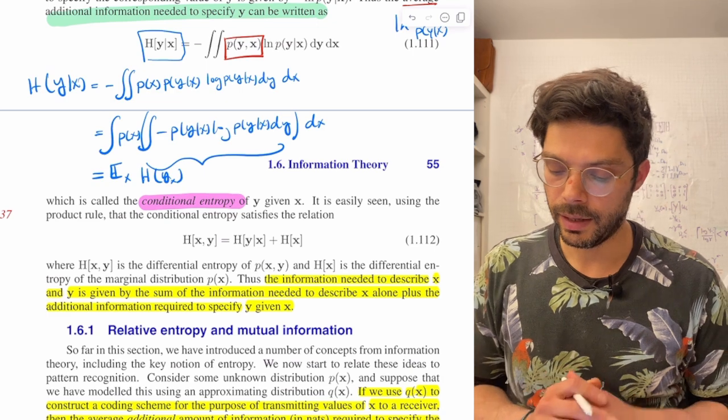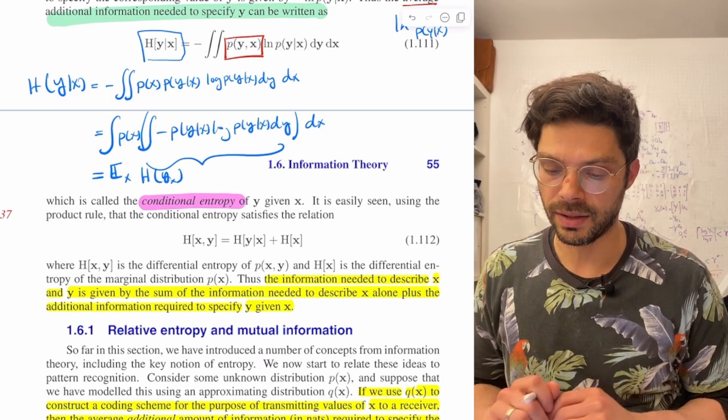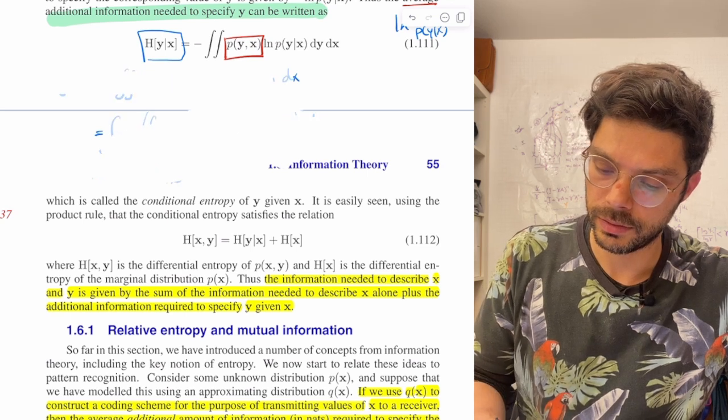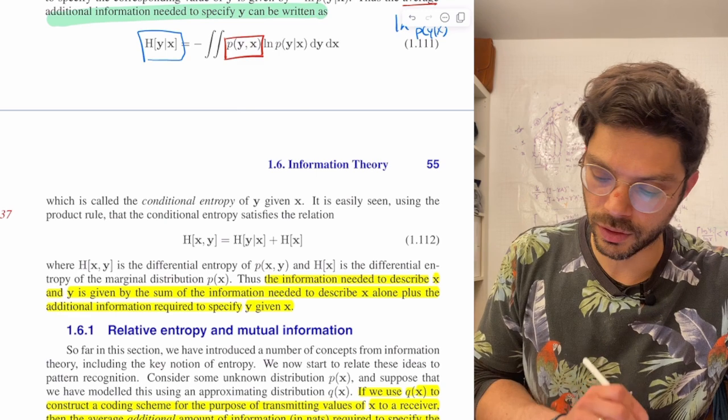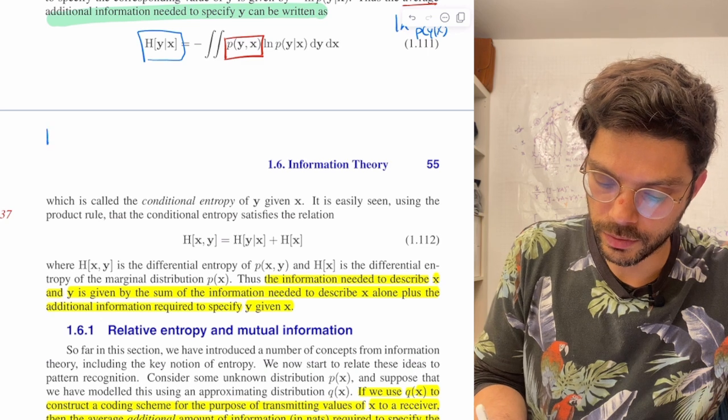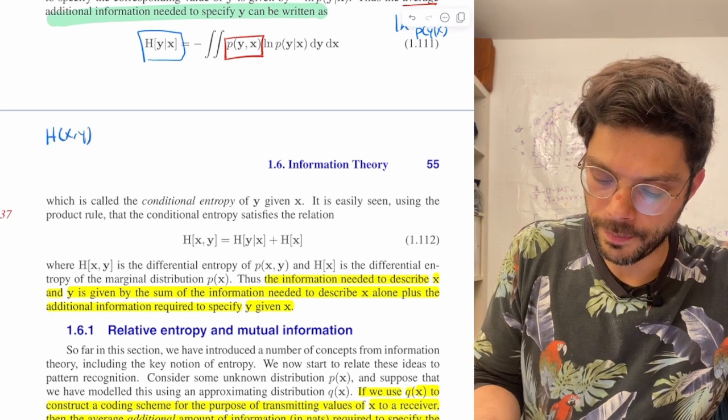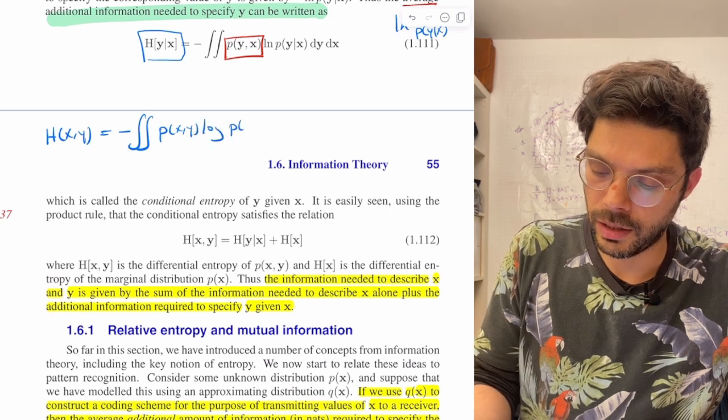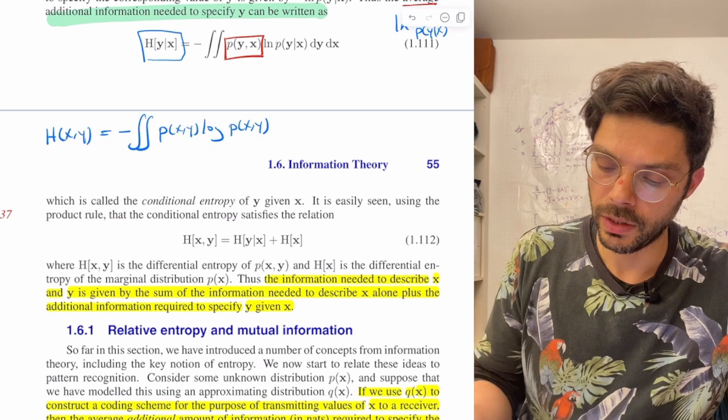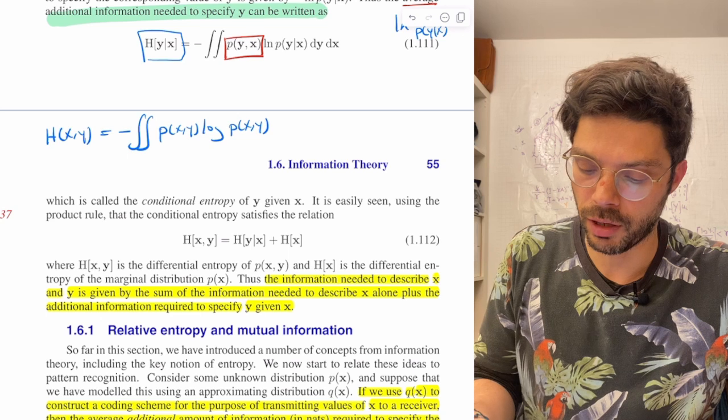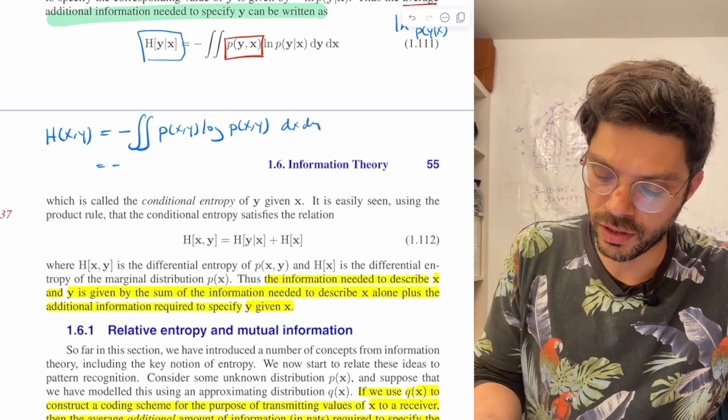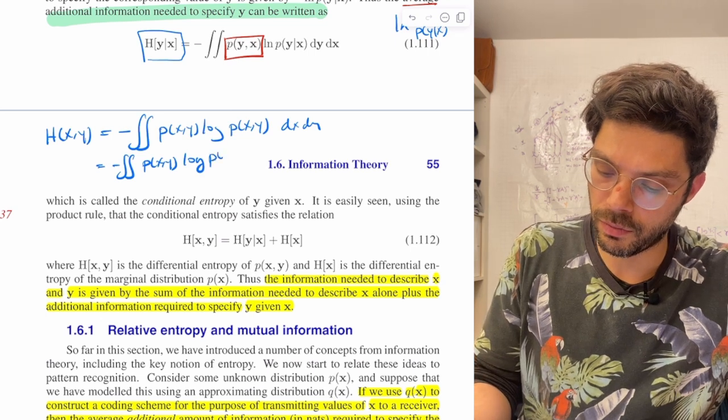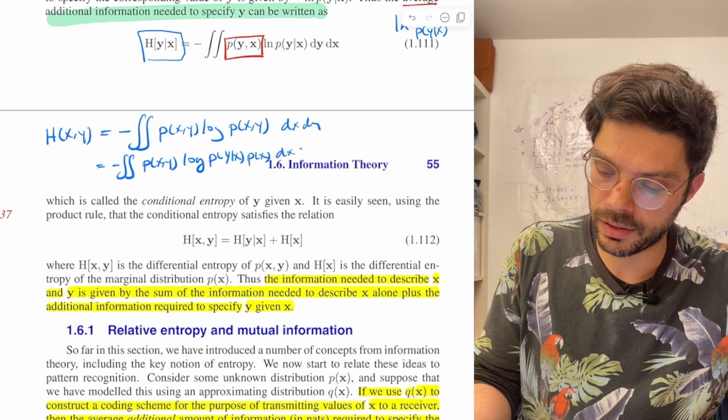Let's just wrap up by showing that this is indeed the case. So h of x, y, we know that it's p of x, y times log of p of x, y, and now we're going to use the product rule, dx dy. And so it's going to equal the double integral p of x, y log of p of y given x times p of x dx dy.